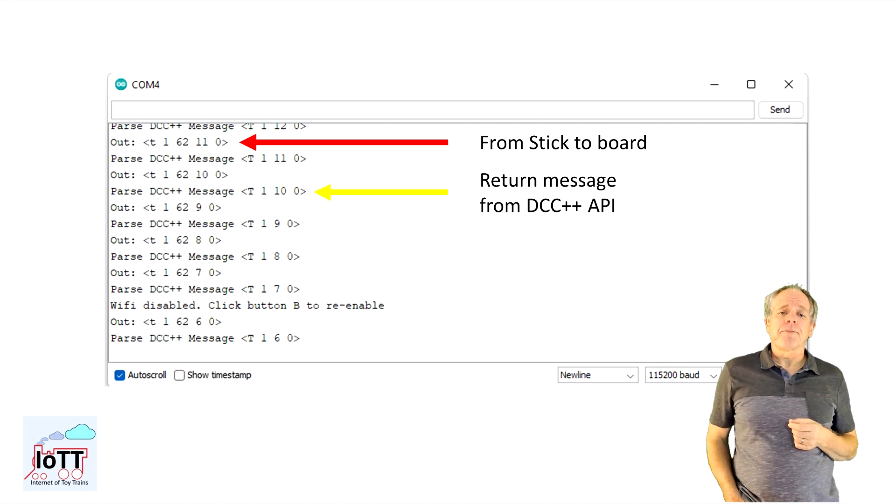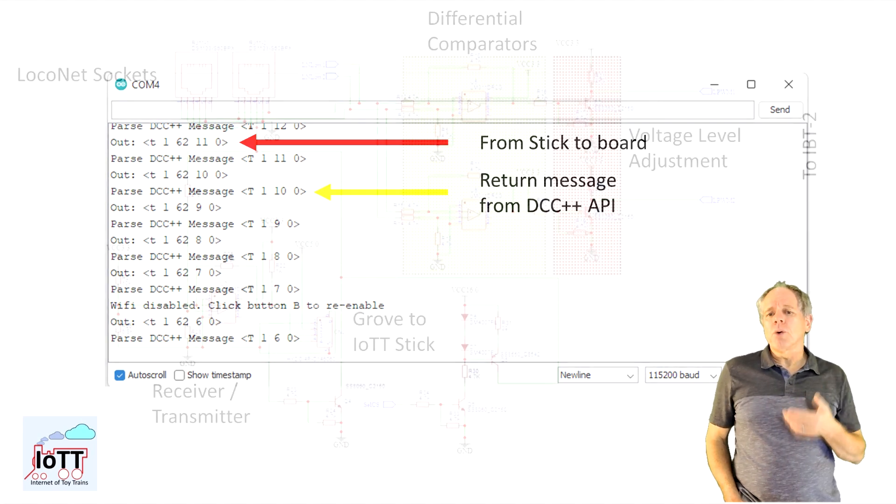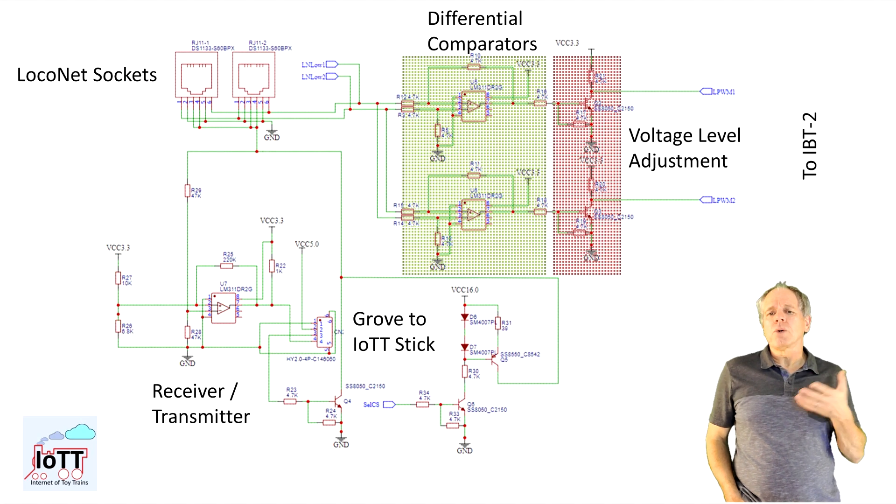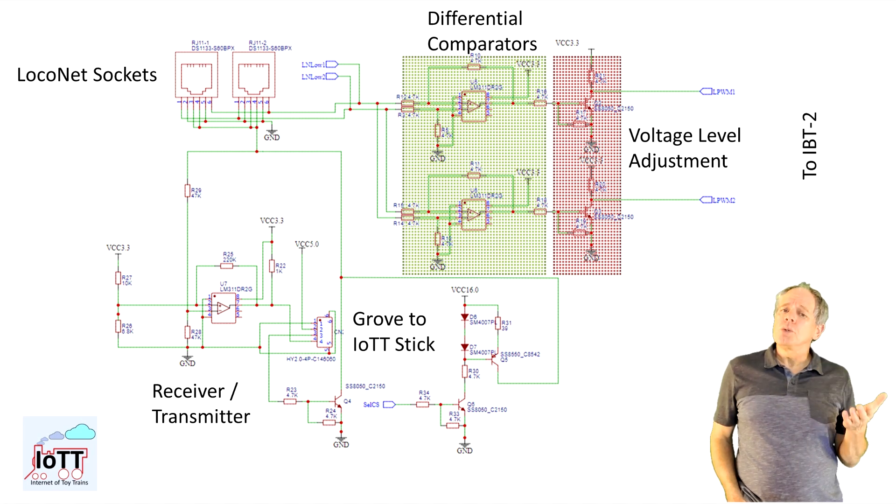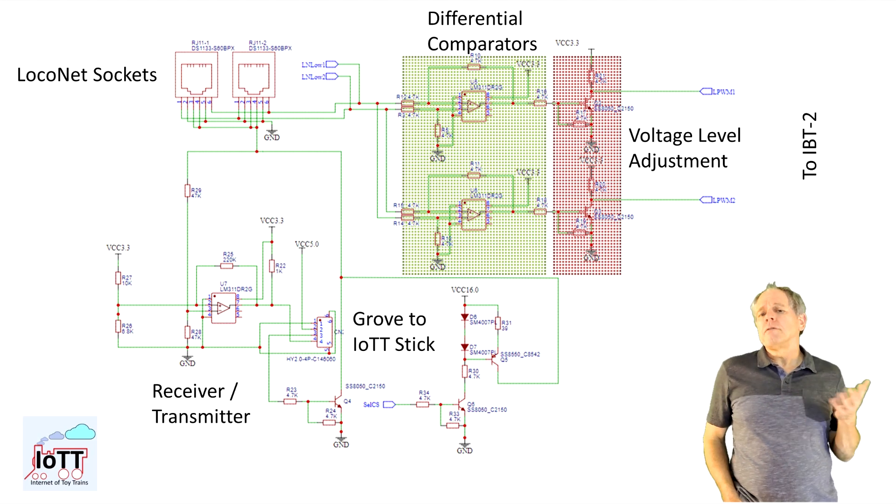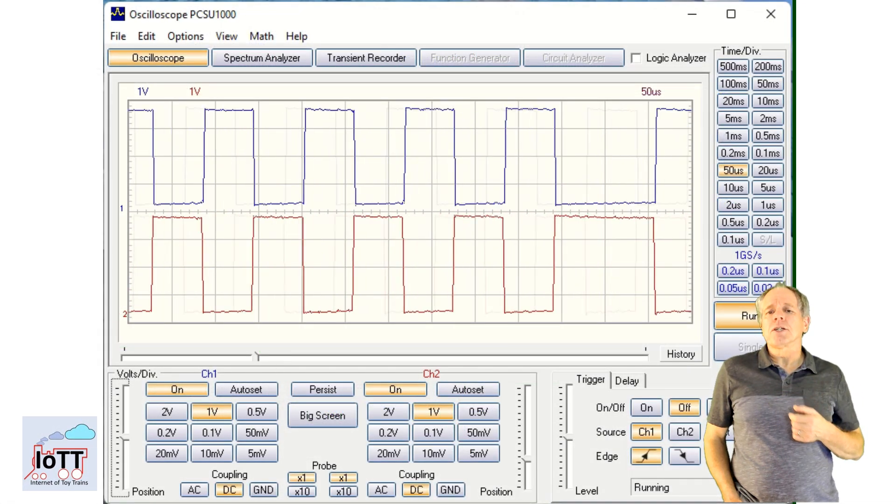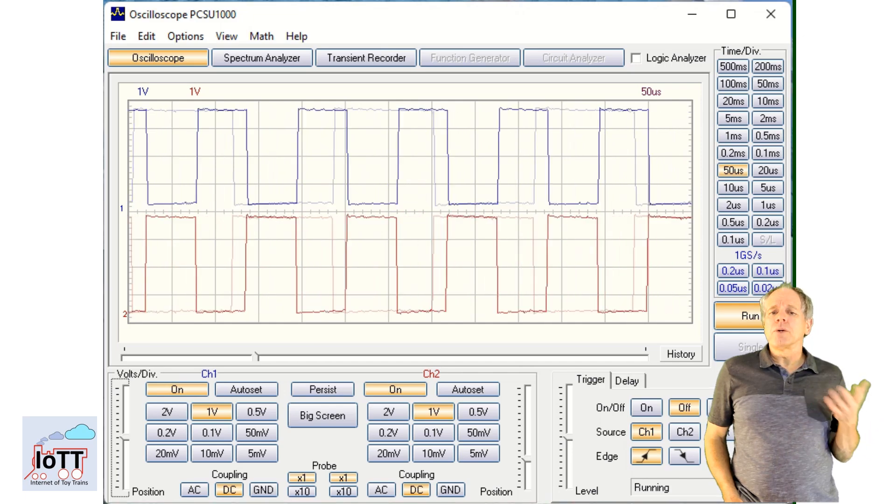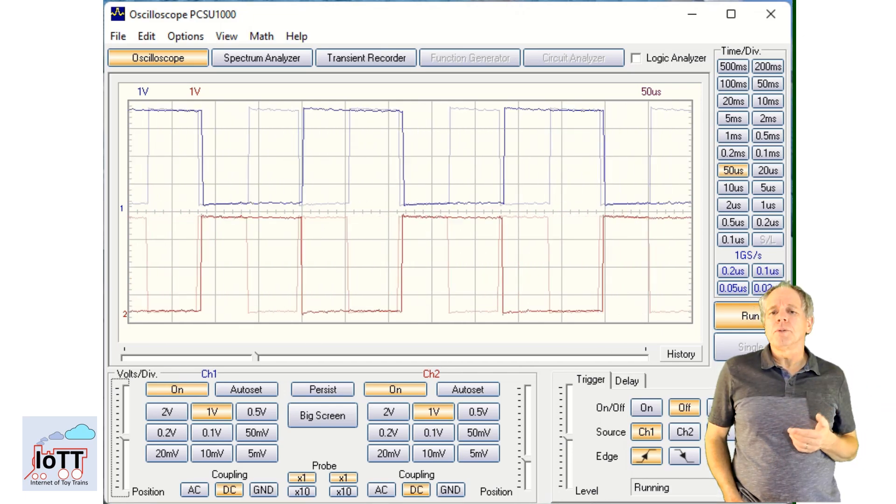Next, I power the board in booster mode and connect an external LocoNet to it. In this mode, the DCC++ signal generator is not activated but the IBT2 should get the input signal from the incoming LocoNet via the comparator and level adjuster. And indeed, when looking at the PWM signals for the IBT2, I see a nice 3.3V DCC square wave as expected.